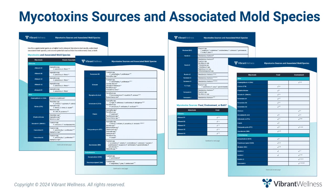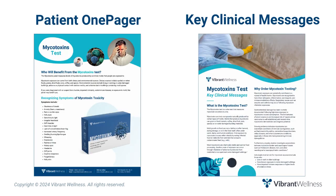Mycotoxins are toxic compounds naturally produced by certain types of molds. Mycotoxin-producing molds can grow on foods such as cereal, coffee, dried fruit, nuts, and spices, or on water-damaged building materials.